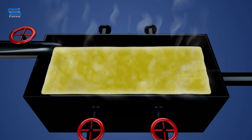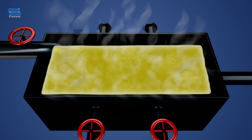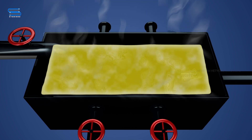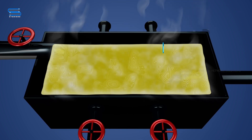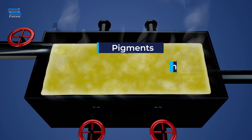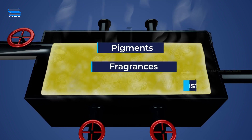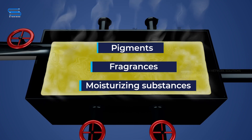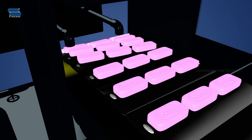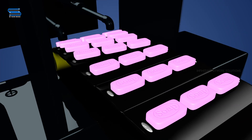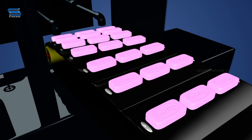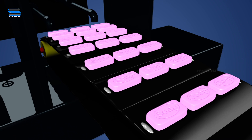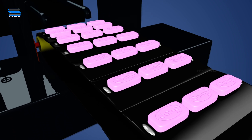The soap is separated off, then re-melted and various ingredients are added, such as pigments, fragrances, and moisturizing substances. This process gives you the type of soap commonly used for washing your hands.